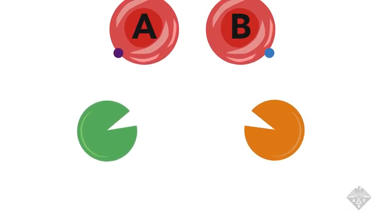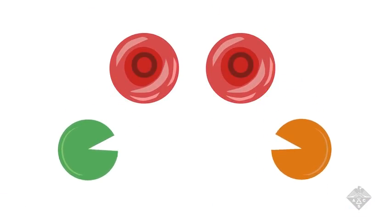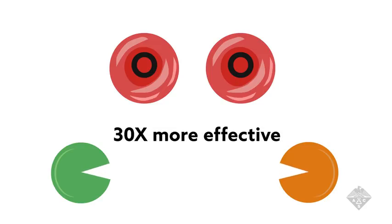The researchers honed in on the enzymes the bacteria used to pluck the sugars off and found a new family of enzymes that are 30 times more effective at removing red blood cell sugars than previously reported candidates.